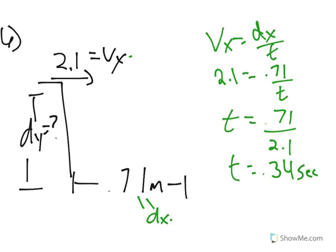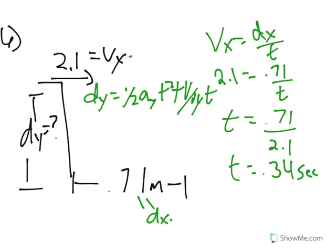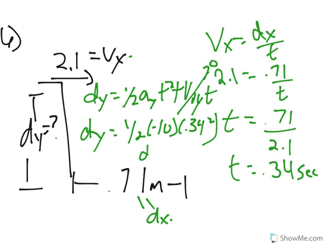Now we have to find dy. dy is equal to one half ay t squared plus viy t. The viy is zero because it's horizontal, so dy equals one half times negative 10 times 0.34 squared, and dy is equal to 0.57 meters.